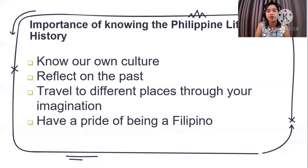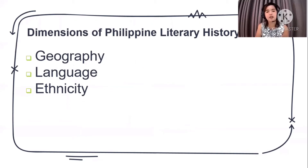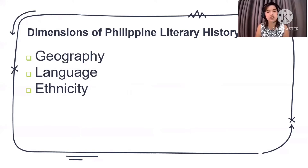Now, these are the dimensions of Philippine literary history: the first is geography, the second is language, and the third is ethnicity.